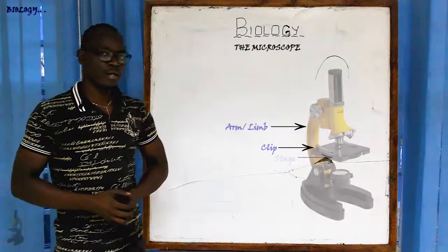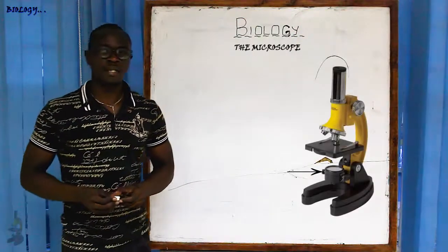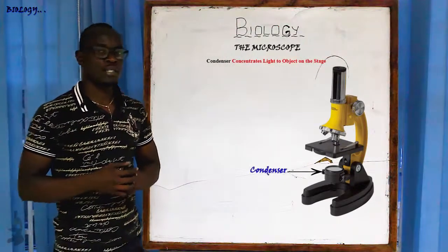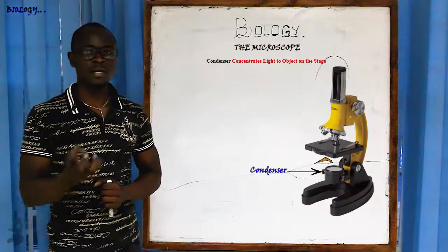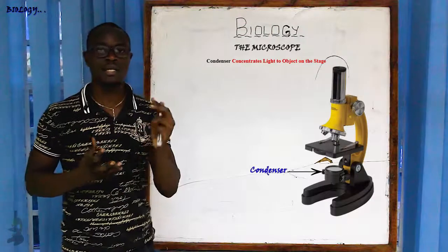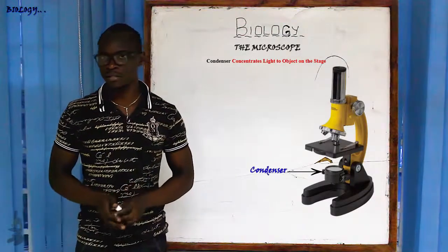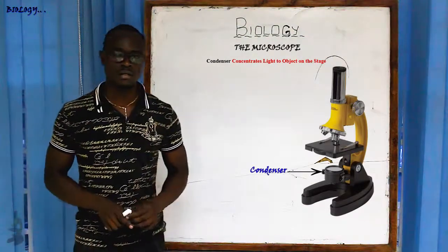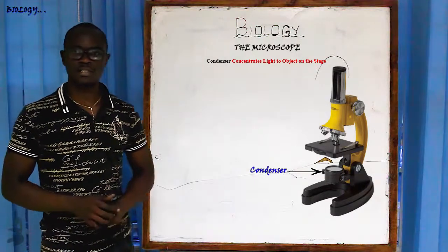Next we have the condenser. The function of the condenser is to concentrate light onto the object. The condenser receives light from the mirror and then concentrates that light on the slide containing the specimen on the stage.